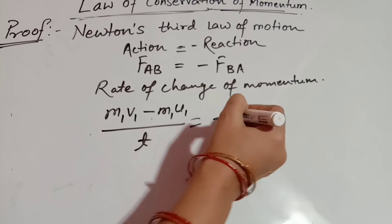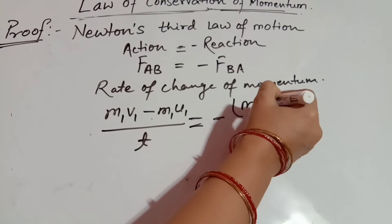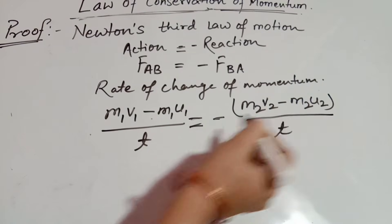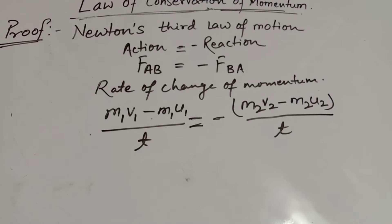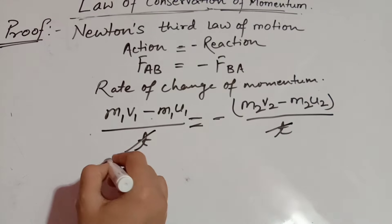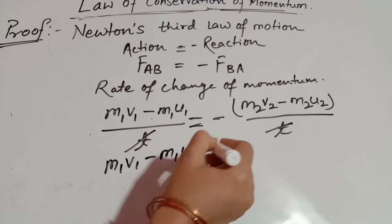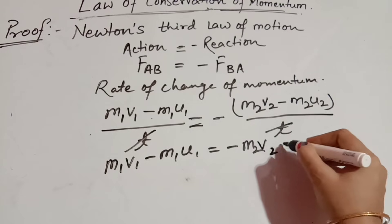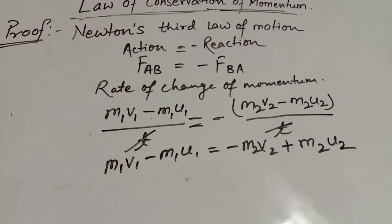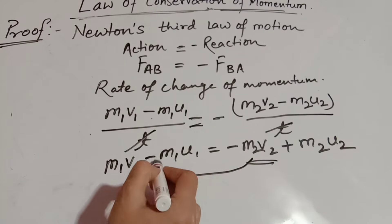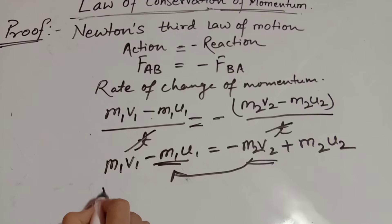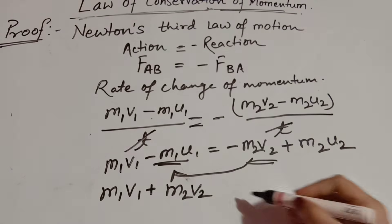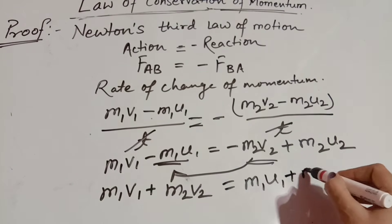Similarly, for object B, we put the negative sign: minus (M2 V2 minus M2 U2) divided by T. This is the rate of change of momentum for both objects. Now simplifying — T cancels — giving M1 V1 minus M1 U1 is equal to minus M2 V2 plus M2 U2. Shifting terms, we get M1 V1 plus M2 V2 is equal to M1 U1 plus M2 U2.